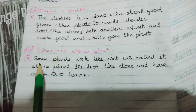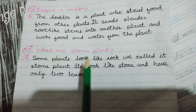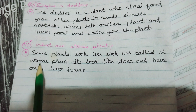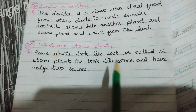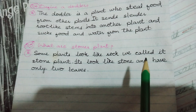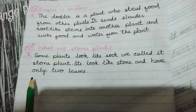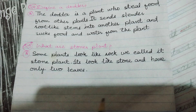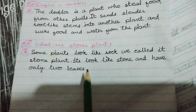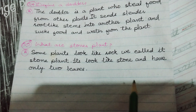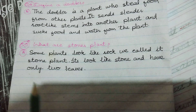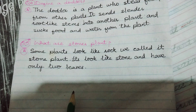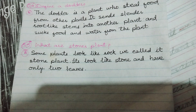The last question is: what are stone plants? Some plants look like rocks — we call them stone plants. They look like stone and have only two leaves to live.